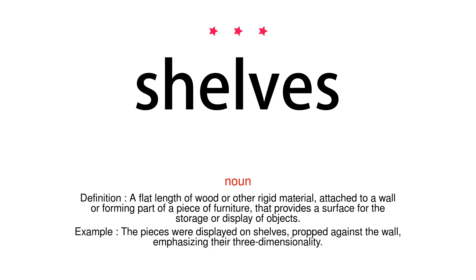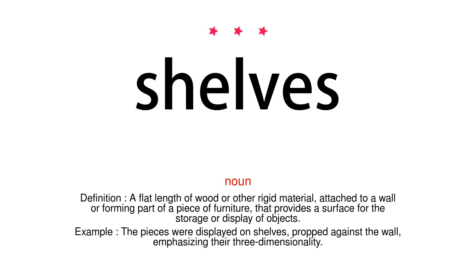Noun. Definition. A flat length of wood or other rigid material, attached to a wall or forming part of a piece of furniture, that provides a surface for the storage or display of objects. Example. The pieces were displayed on shelves, propped against the wall, emphasizing their three-dimensionality.